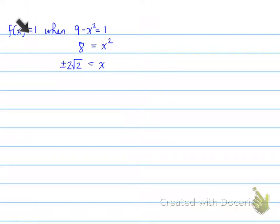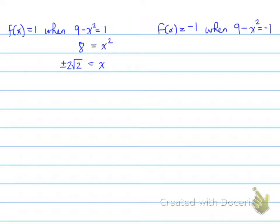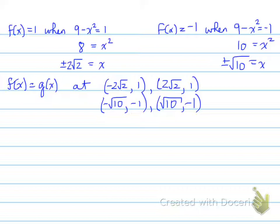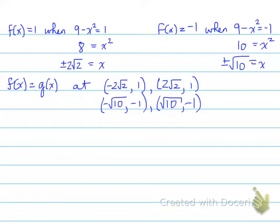Remember, this is the y-value. If I flip 1 — the reciprocal of 1 — I get 1/1, which remains the same as 1. The same goes for negative 1. We find the values when the function equals negative 1, and it equals plus or minus √10. So the function f(x) equals g(x) at these values. These are the coordinates where they share the same point, whether it's the original parabola or the reciprocal function g. These coordinates do not change.